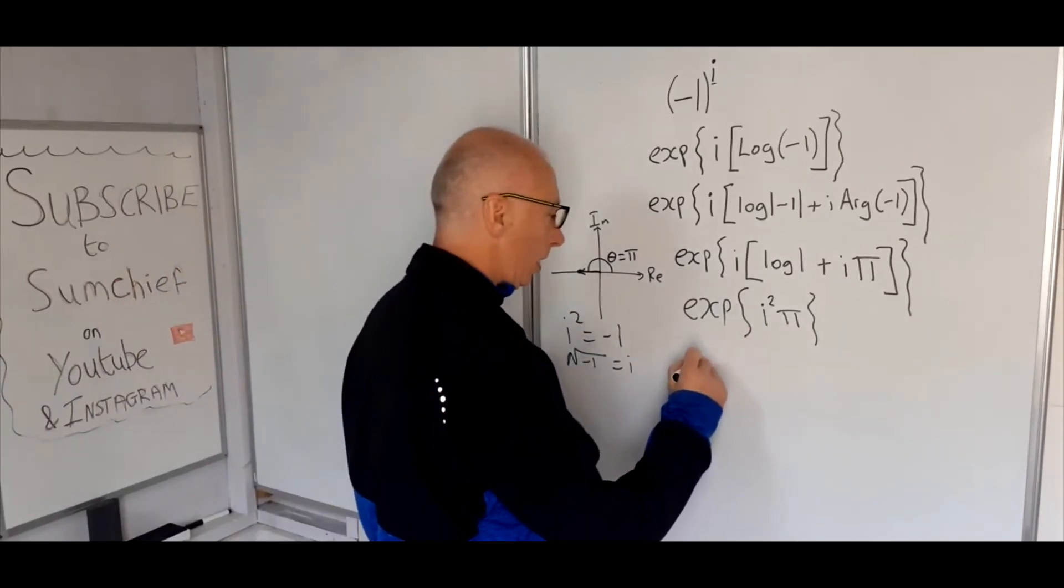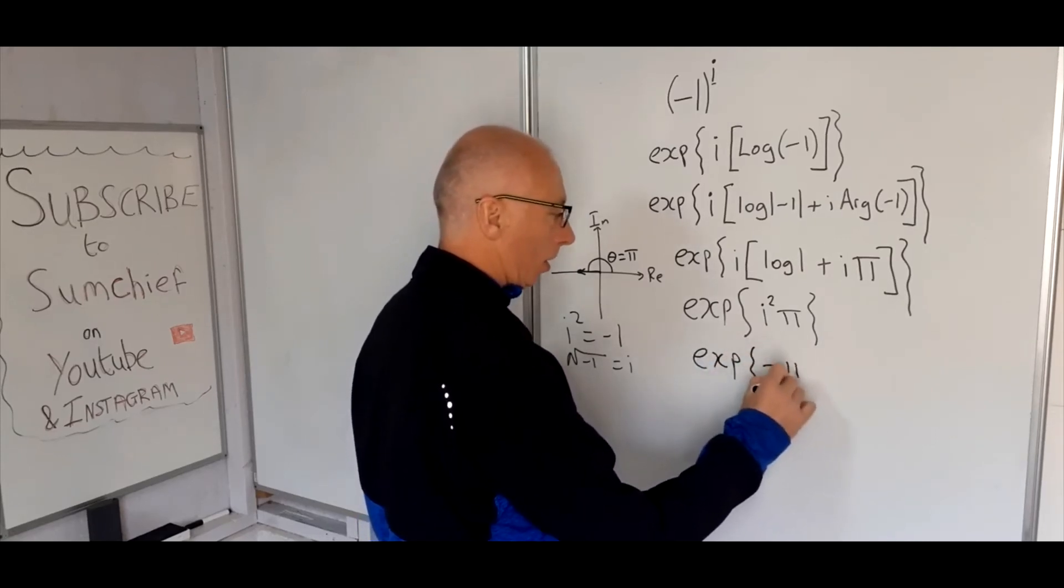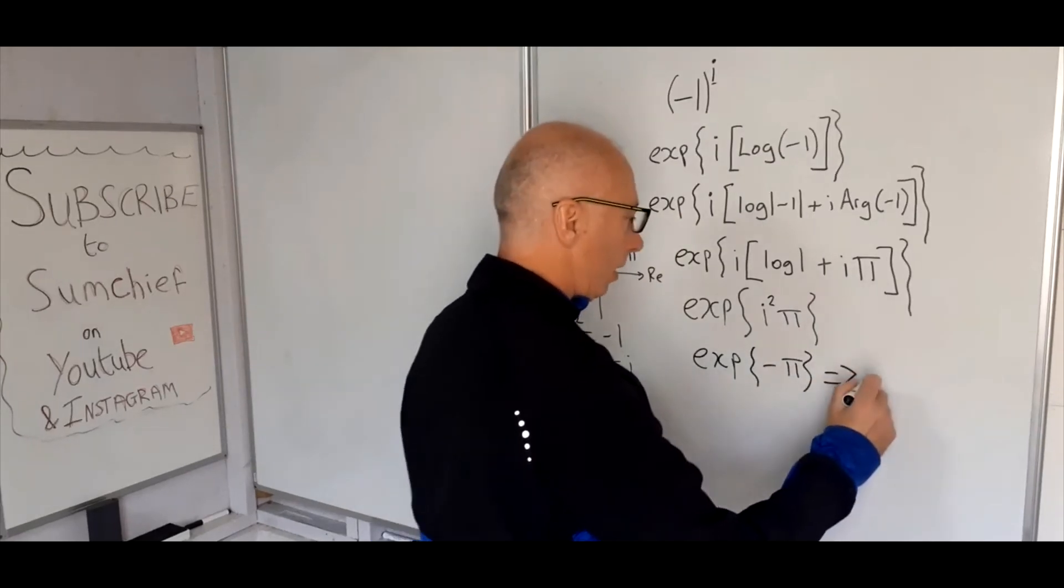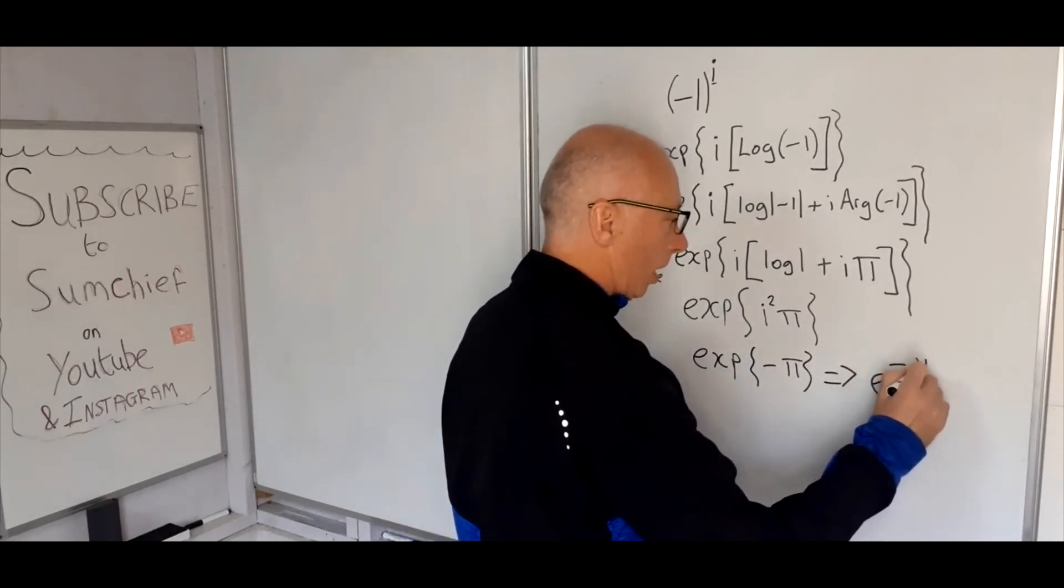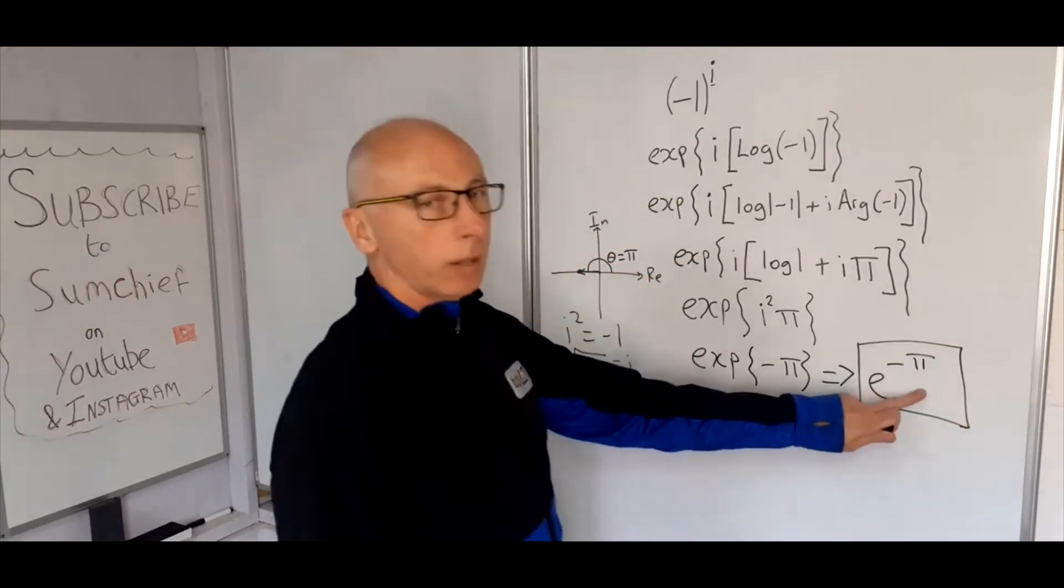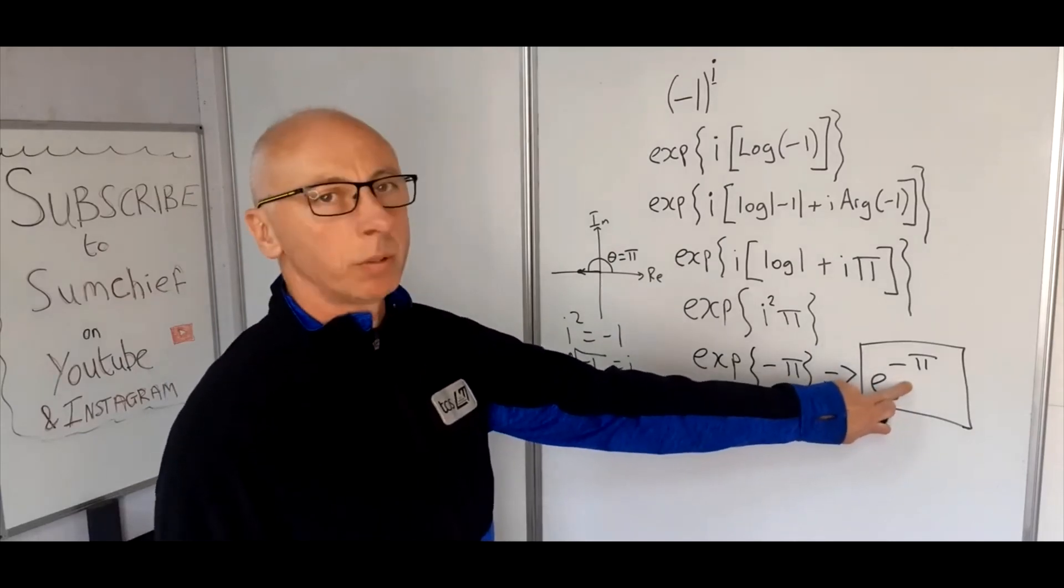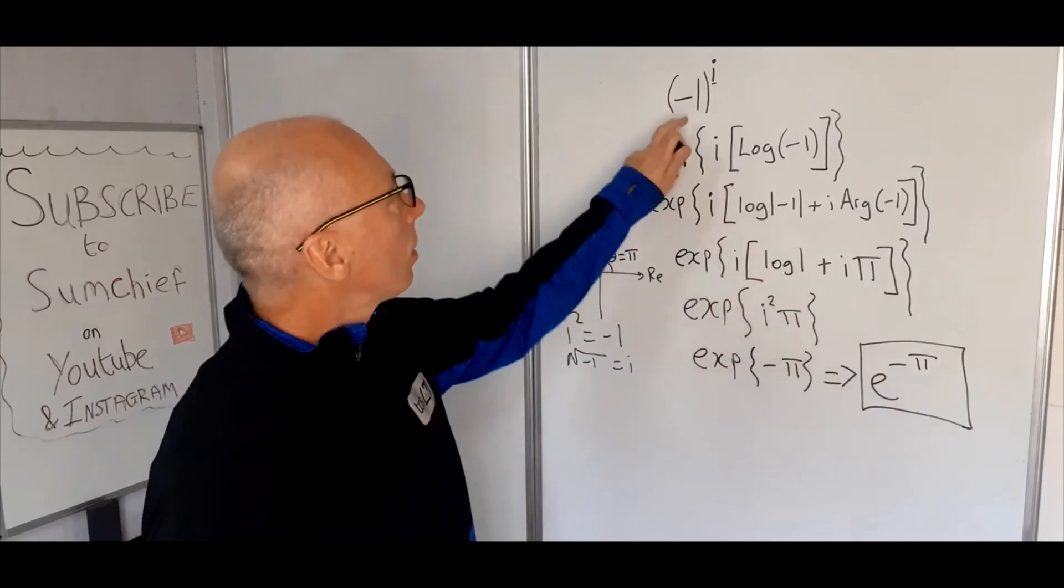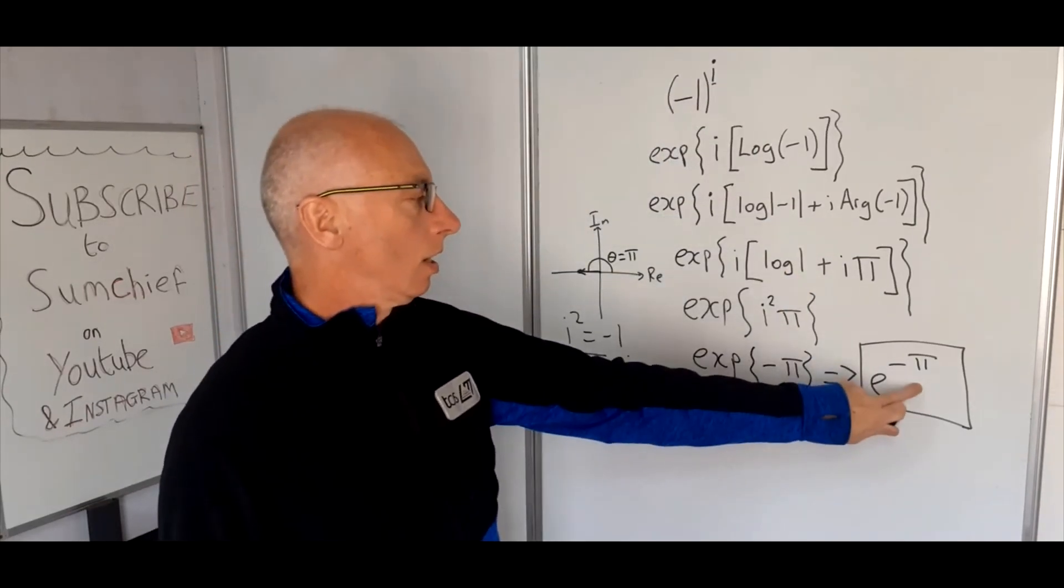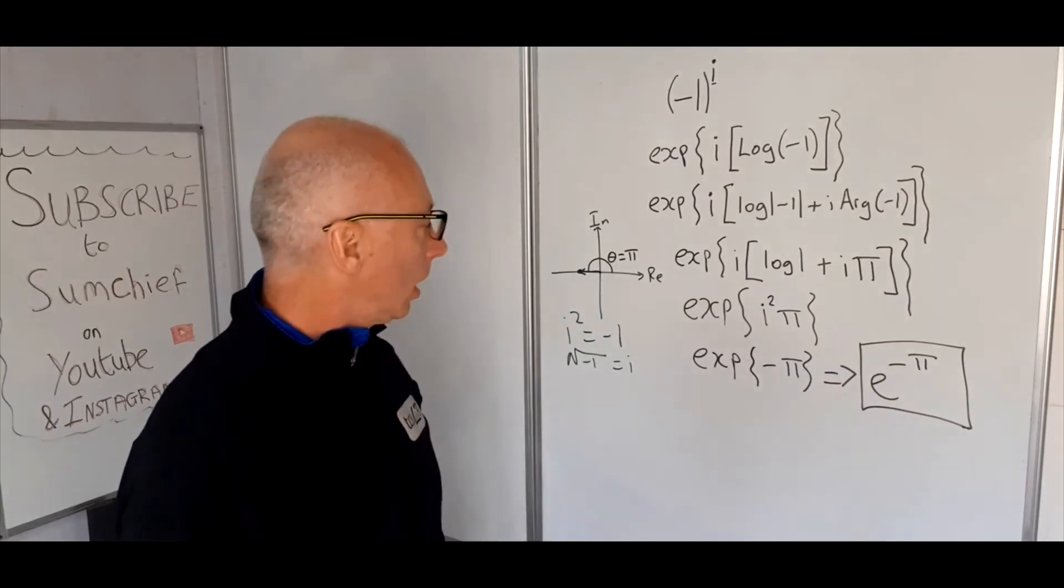So basically our answer is exponential of minus pi, or we can write it like this: e to the minus pi. And that's what I will take as our answer, and that would also count as our answer in Cartesian form because this is a real number, e to the minus pi. So you get from minus one to the power of i, which i is an imaginary number, and you end up with a real answer, with a real number for the answer. Okay?